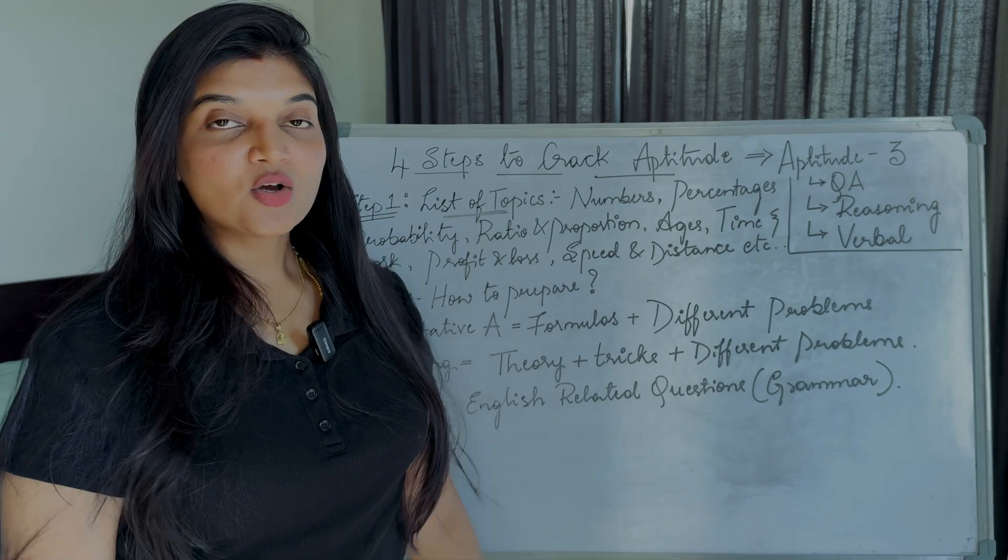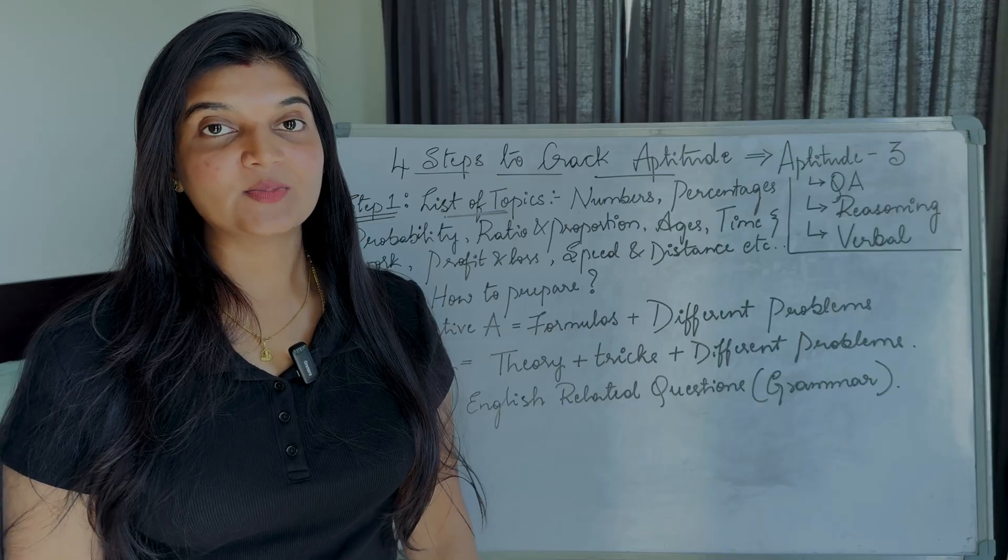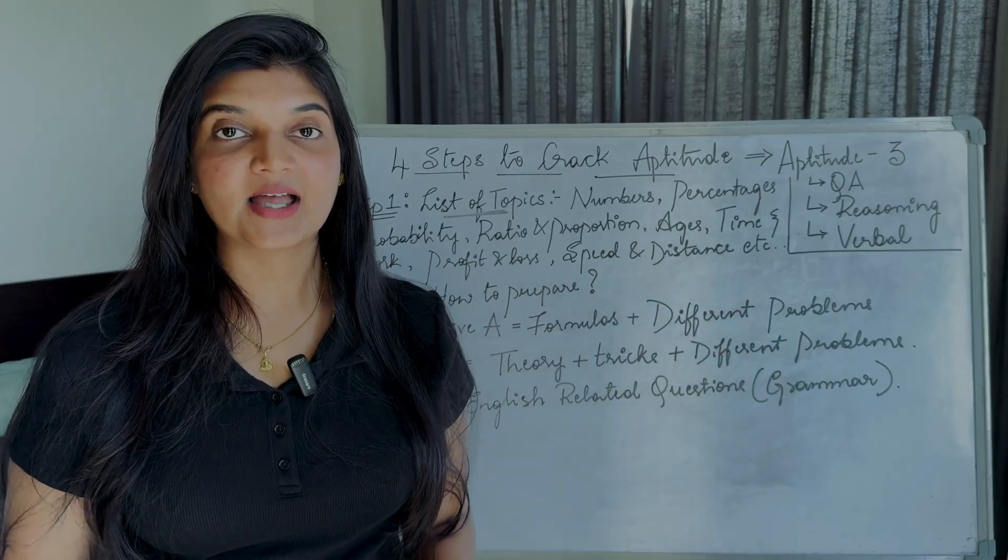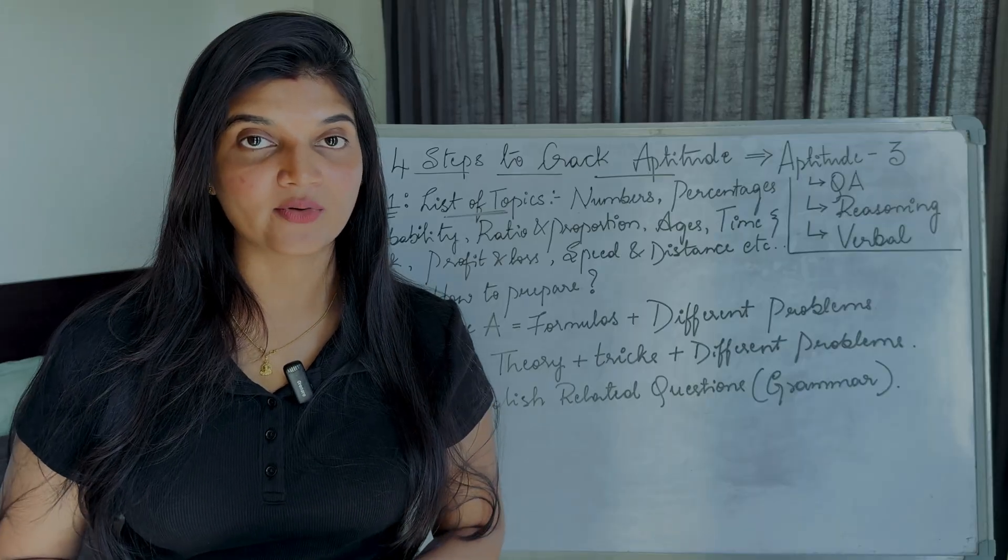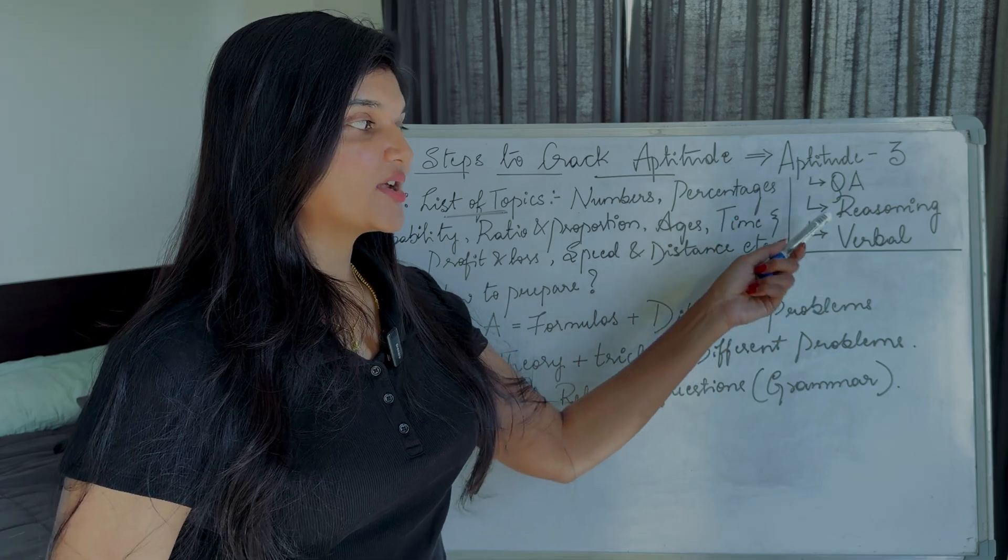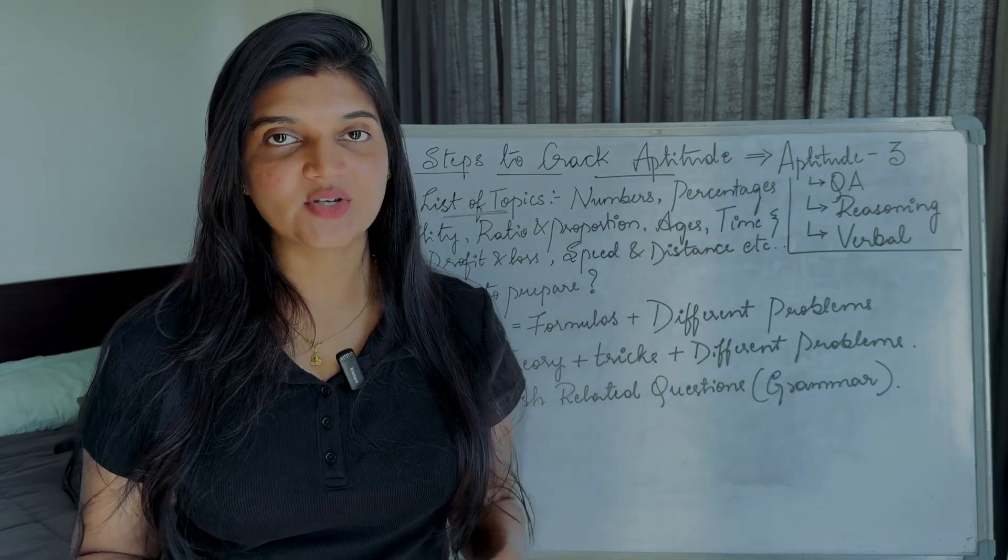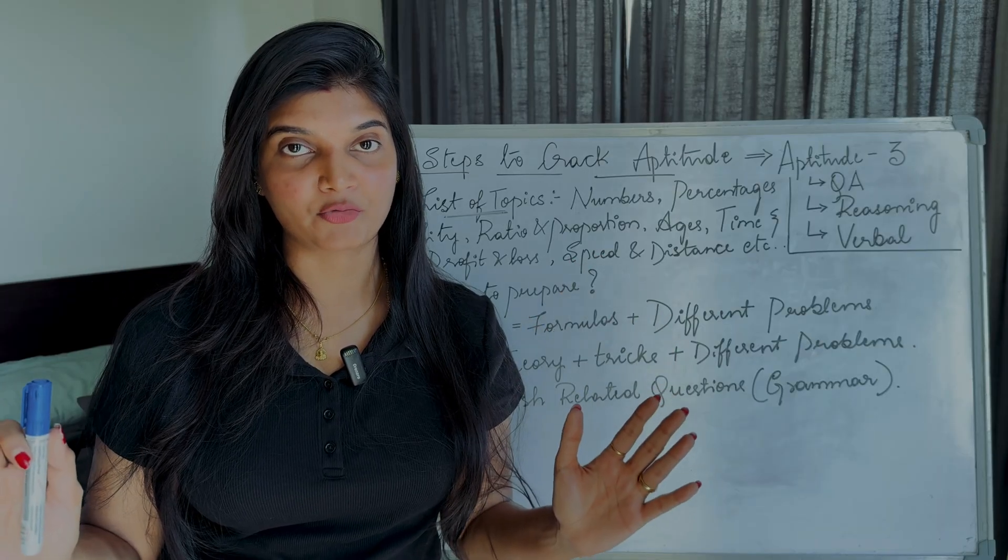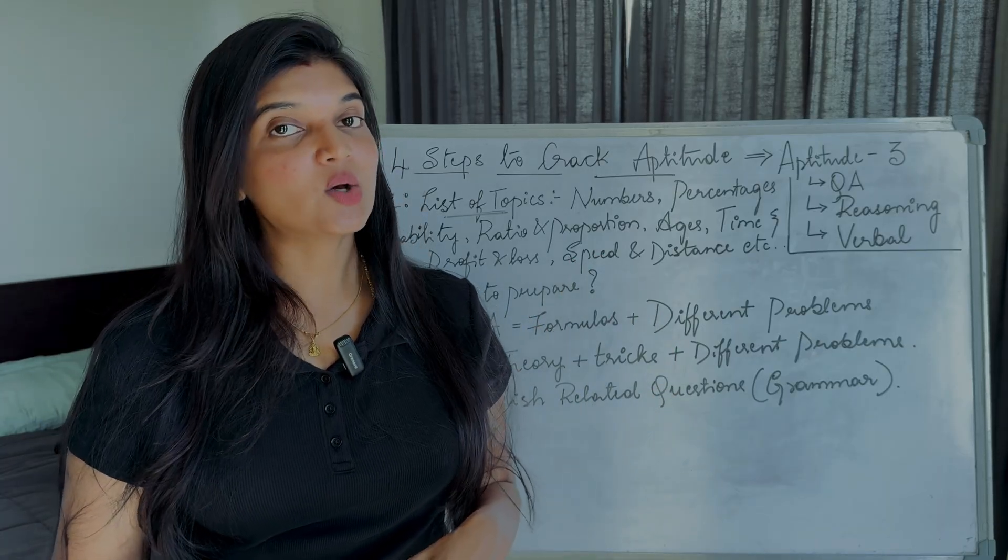Before moving on to the steps to follow, let me tell you guys like what exactly Aptitude consists of. So Aptitude is a combination of quantitative Aptitude, reasoning, and verbal. These are the three sections which comprise a complete Aptitude round. So let's go one by one.